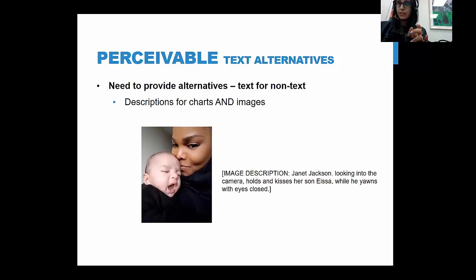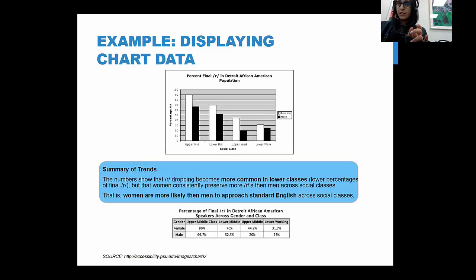This guideline sometimes bothers people who think they have to write a novel to describe an image, but it's actually super simple — you're literally just describing what is tangibly there. An example pulled from social media had an image description of less than 20 words. People using screen readers don't want to hear a novel for one image; you really just need to mention the basics.